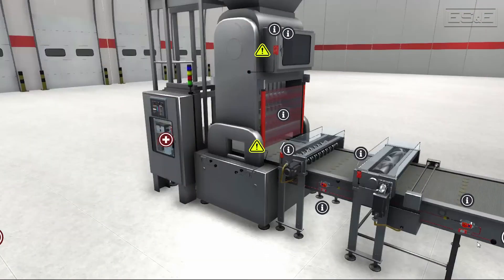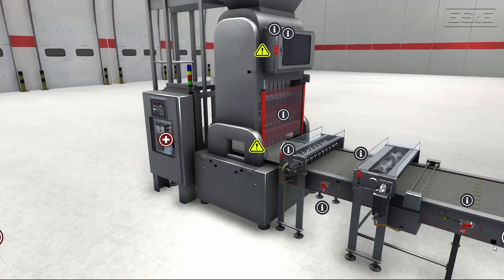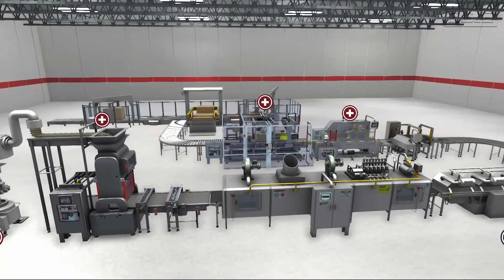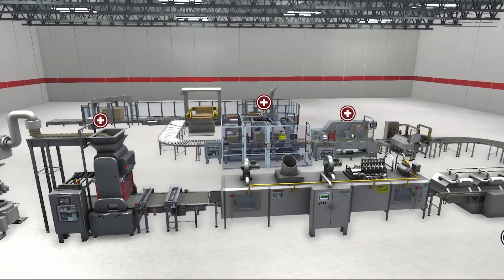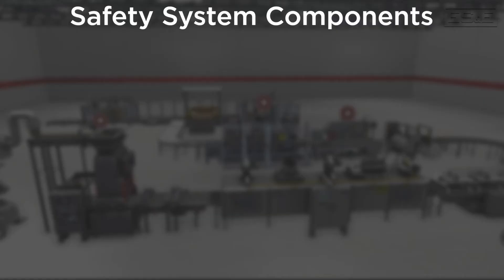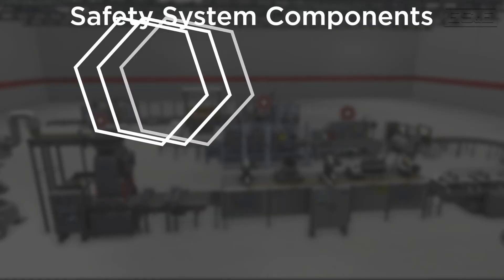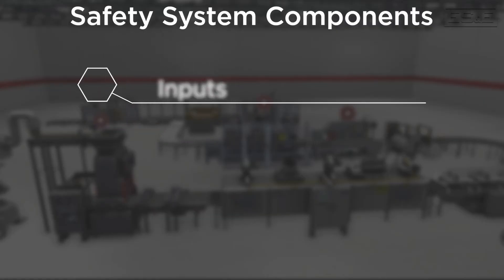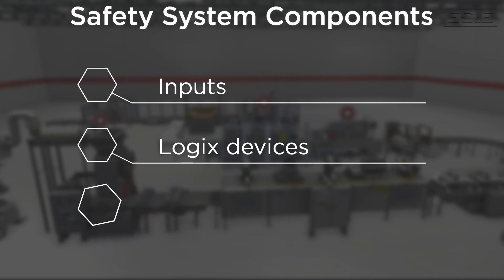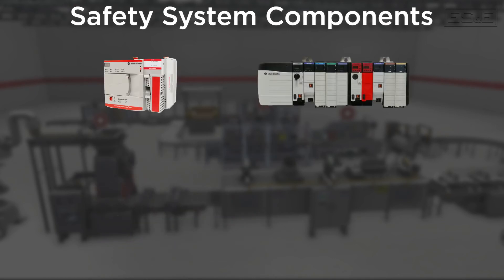When looking at the safety-related parts of a control system, you always have to keep in mind that the safety system is made up of three main components. Those components are inputs, logic devices, and outputs. Rockwell has two major categories of GuardLogix controllers, which are the CompactLogix and ControlLogix.